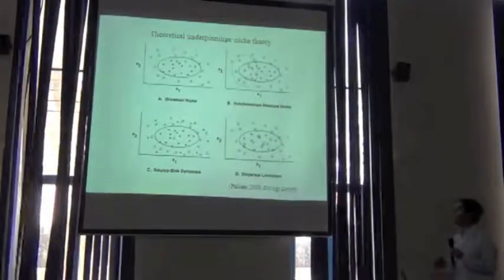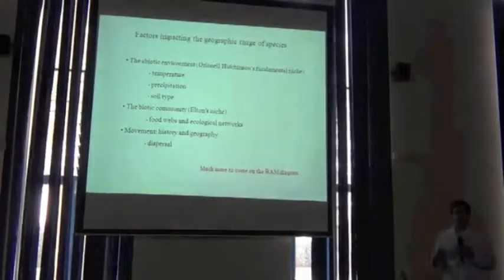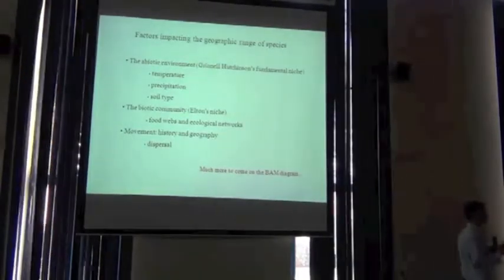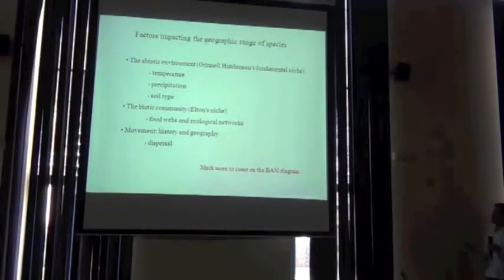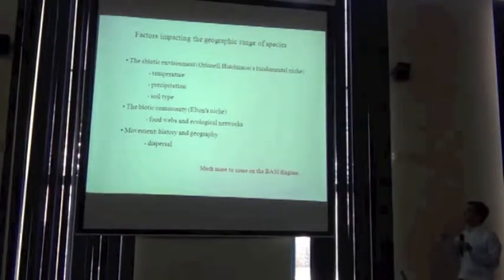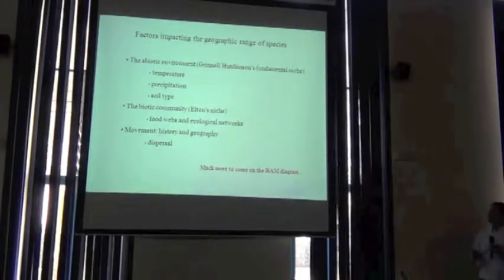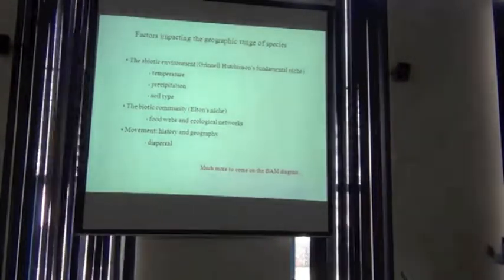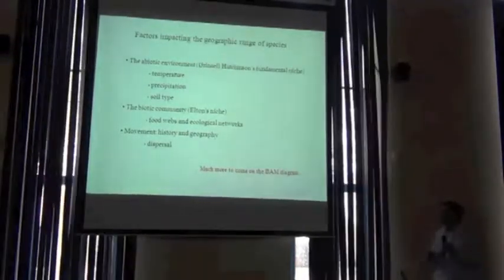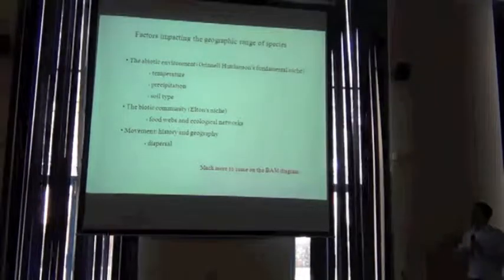What factors influence the distribution, or the geographic range, of the species? In one slide, some very basic biogeography, we can boil it down to three things: the abiotic environment — temperature, precipitation — related back to the Grinnellian and Hutchinsonian or fundamental niche; the biotic community — interactions with other species, since species are part of ecological communities, food webs, and ecological networks; and the idea of dispersal.